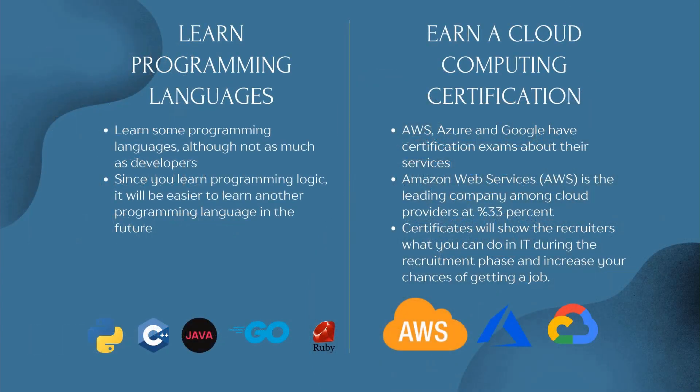We need to learn some programming languages, although not as much as developers. For example, knowing one of the programming languages such as Python, C++, Java, Ruby, or Go at a reasonable level will help tremendously in becoming an engineer. Since you learn programming logic, it will be easier to learn another programming language in the future.